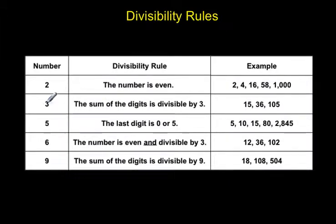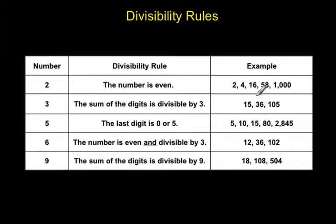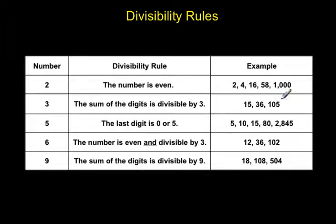For the number 3, the divisibility rule is: the sum of the digits is divisible by 3. You add up the digits in the number and see if that sum is divisible by 3. Take 15: 1 plus 5 is 6. Is 6 divisible by 3? Yes. So 15 is divisible by 3. Take 36: 3 plus 6 is 9, and 9 is divisible by 3. Take 105: 1 plus 0 plus 5 is 6, and 6 is divisible by 3. So just by looking at it, you can tell 105 is divisible by 3.